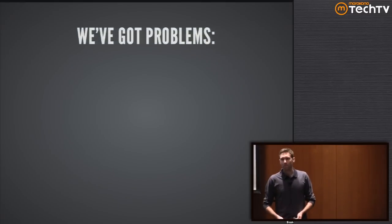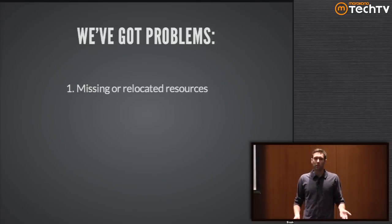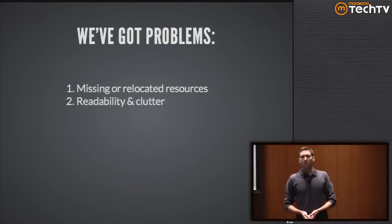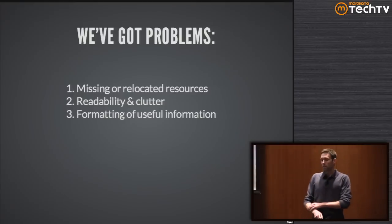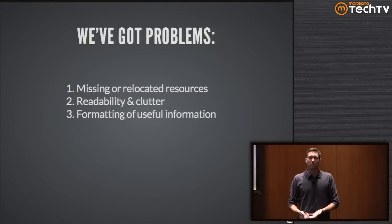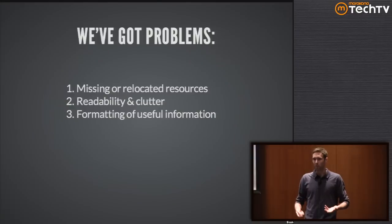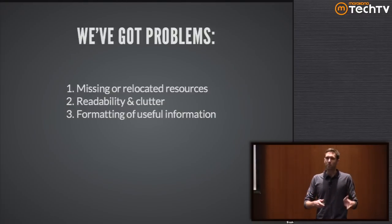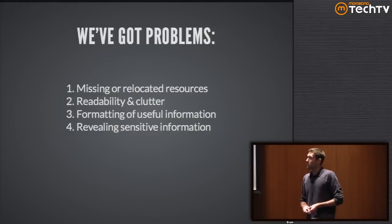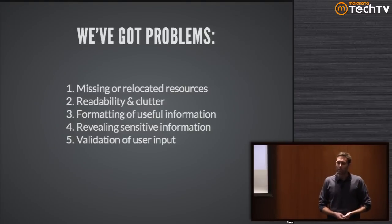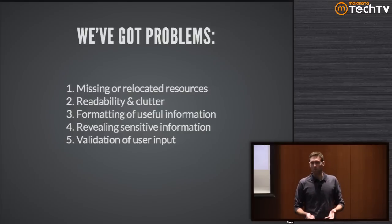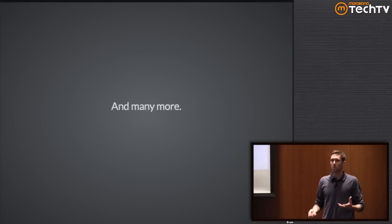There are several problems with the web. The first is missing or relocated resources - a lot of stuff on the web just isn't there anymore. There's a problem with readability and clutter, presenting people with too much or the wrong information. There's formatting - how do we present this in a human-readable way? The web was designed for machines in many aspects, but we need to present the right information to the right being. There's also revealing sensitive information and validating input we receive.